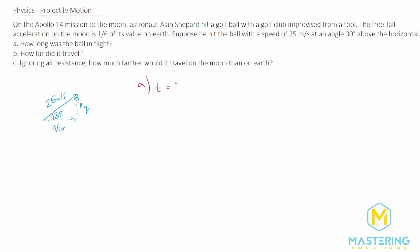For part A we're trying to figure out the time — how long was it in the air. Just like any kinematics question, there are several ways to approach this, so if you do one slightly differently but get the same answer, the math is equivalent. The equation I'll use is the expanded form of the acceleration equation: acceleration equals change in velocity over change in time, which we break up as (v_final minus v_initial) divided by delta-t. We isolate t by multiplying both sides by t, giving acceleration times time equals v_final minus v_initial.